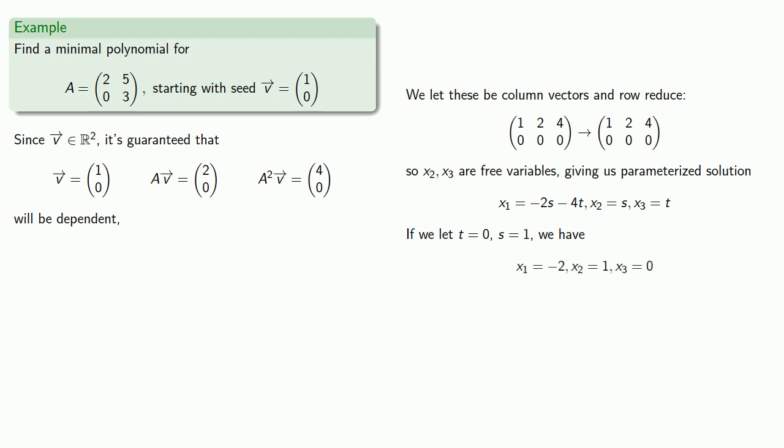A corresponding equation with the vectors minus 2V plus AV plus 0A squared V. Or, more simply, minus 2V plus AV. And so we have a minimal polynomial, minus 2 plus λ.